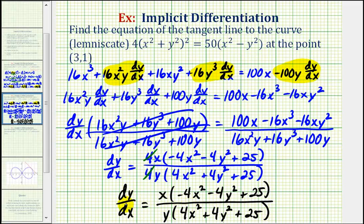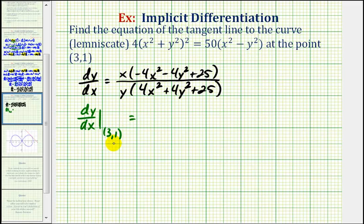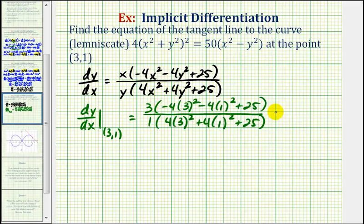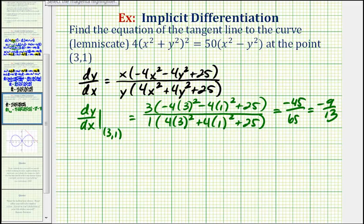Our ultimate goal was to find the slope of the tangent line at the given point. So now we evaluate this derivative at the point (3, 1), substituting 3 for x and 1 for y. This comes out to negative 45 divided by 65, which simplifies to negative 9/13.